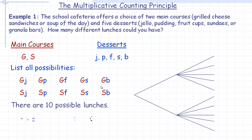The Multiplicative Counting Principle says: since we can select the main course in two different ways and the dessert in five different ways, we get 10 by just multiplying 2 by 5. The 2 is the number of ways the first part can be selected, and the 5 is the number of ways the second part can be selected. It doesn't matter whether you do 2 times 5 or 5 times 2 — it still works out to 10.